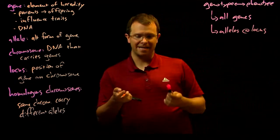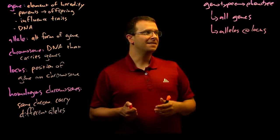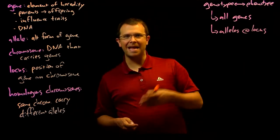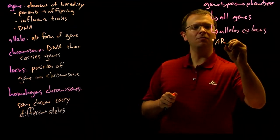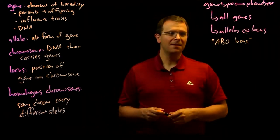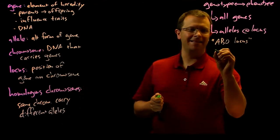So here's a concrete example. The locus that determines your blood type, be that blood type A or B or O, is called the ABO locus. Makes sense, doesn't it? And so there are three alleles that are possible at that locus.